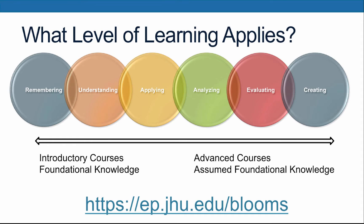As you begin to think about the design of your course, you should first consider the complexity of your content as well as the learning level of your students to determine where the majority of the learning should fall. Lower level or introductory courses introduce a variety of skills and new concepts, and therefore have a majority of learning objectives fall within the lower order thinking skills. Advanced courses often assume that the student comes prepared with foundational knowledge, and they are now ready to use this knowledge to move on to higher order thinking and learning, and therefore should contain learning objectives that focus on higher order skills.